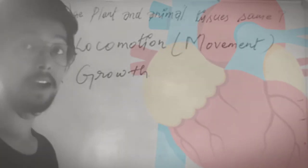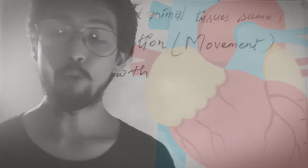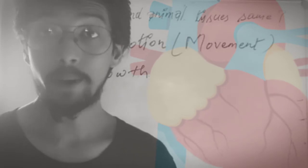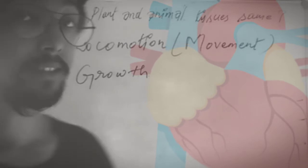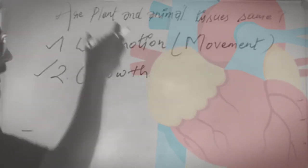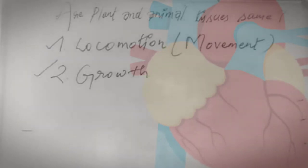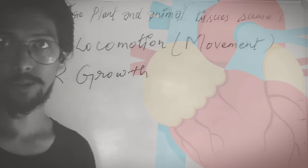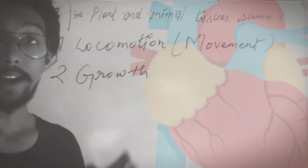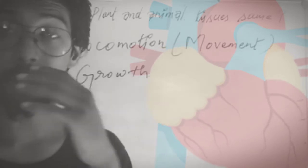The second difference is growth. We can see growth in plants throughout their entire lifespan, but in humans and animals it is only for a particular period of time. Some parts like ears, nails, and hair keep growing throughout the lifespan in animals, but in plants all parts grow throughout the whole lifespan. So the two important points are: first, locomotion, and second, growth.